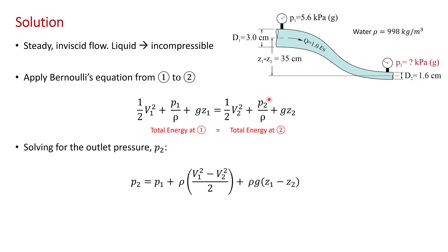So what I've done next is solve for P2, and you should check my algebra here. Now, looking at the right-hand side of this equation, from the problem statement, we know the inlet pressure, P1. We also know the change in elevation of the tube, Z1 minus Z2, which is 35 centimeters.